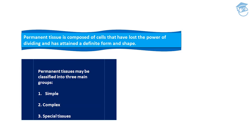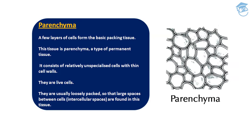Permanent tissue is composed of cells that have lost the power of division and have attained a definite form and shape. It is classified into three main groups: simple, complex, and special tissue. The first simple tissue is parenchyma — a type of permanent tissue. Few layers of cells form the basic packing tissue. They consist of relatively unspecialized cells with thin cell walls, usually loosely packed so that large spaces between the cells are found.